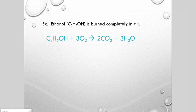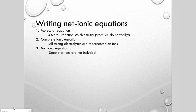The next topic is writing net ionic equations. First we write the molecular equation as usual. Then we write the complete ionic equation, where any substance that ionizes in solution is written in ion form; substances that don't dissolve or ionize are left as is. Finally, in the net ionic equation, spectator ions are removed from the complete ionic equation and only the active ions are expressed.